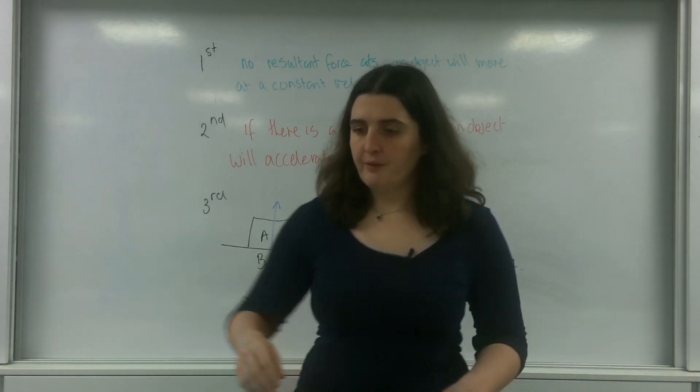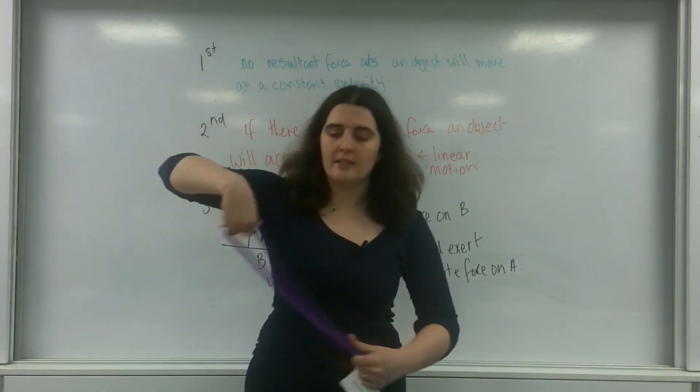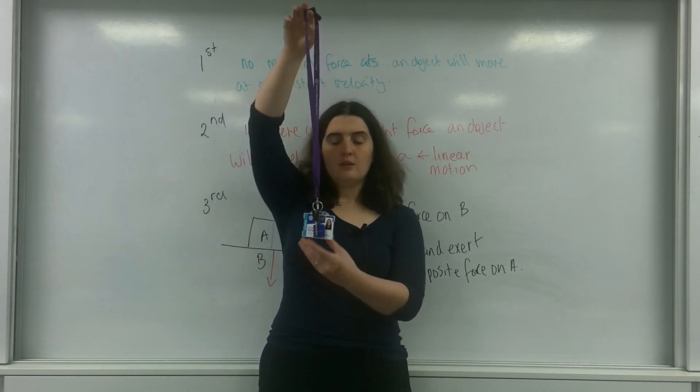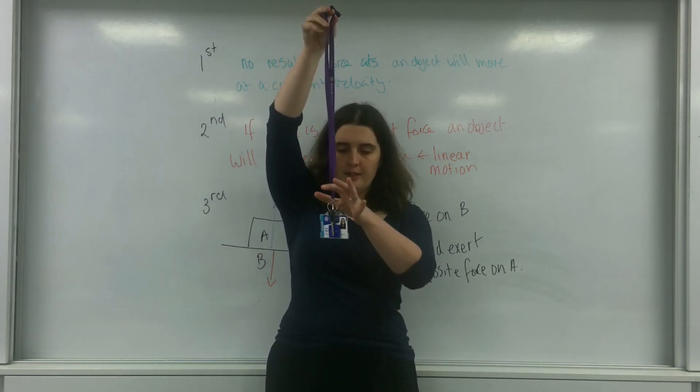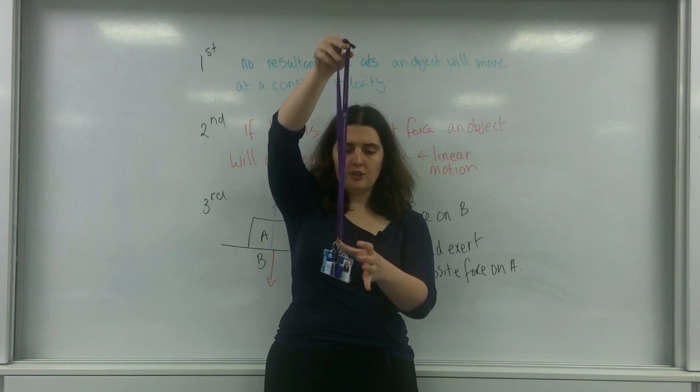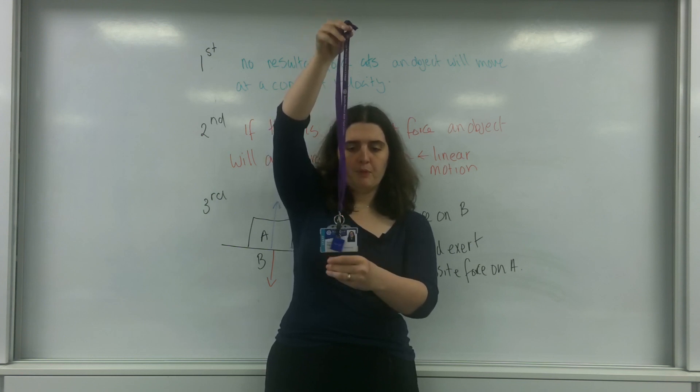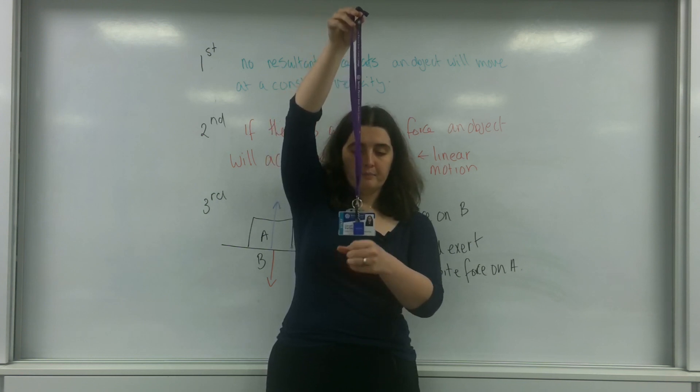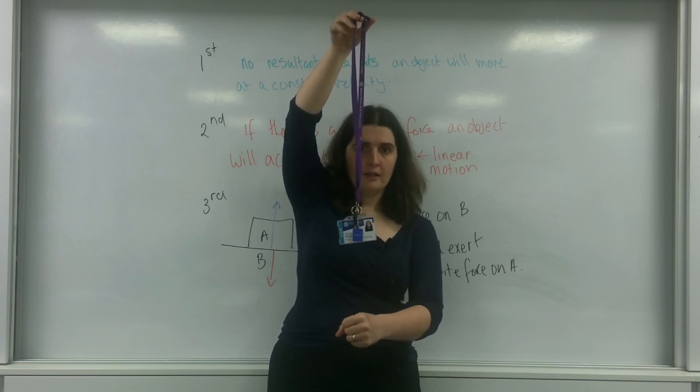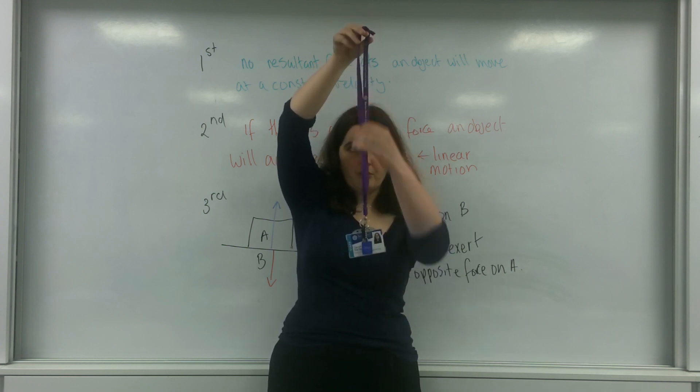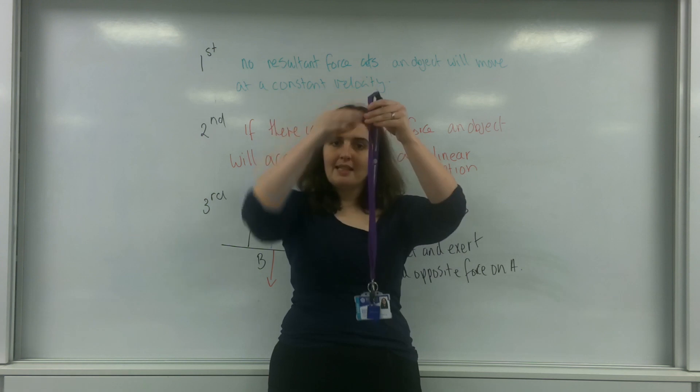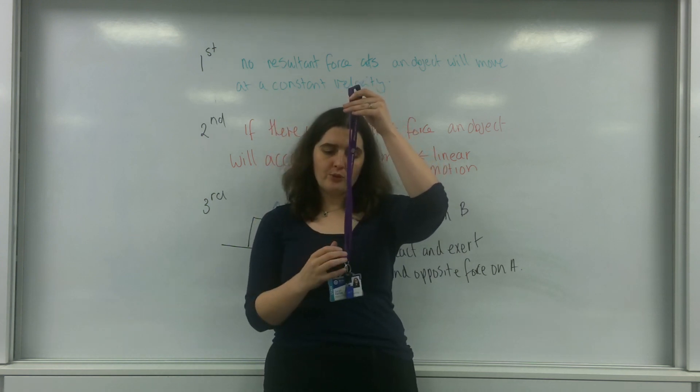So for example, if I took my lanyard here, this object here, this string, this object here is going to put a weight down on the ground here. So this is pulling it down, this is pulling my string down with a weight, which means there is a tension, an equal and opposite force.